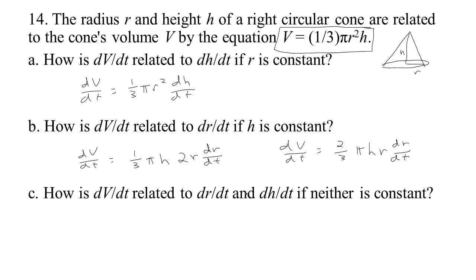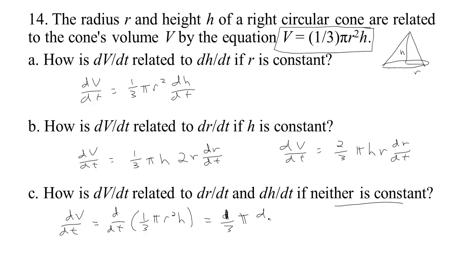What if both r and h are allowed to vary, so neither is constant? Then we take the derivative of both sides. On the left we get dV/dt. On the right, taking the derivative with respect to t of (1/3)πr²h, we have a product of two things. The constants (1/3)π pull through, and we have (1/3)π times the derivative with respect to t of the product r²h. Since r is a function of t and h is also a function of t, we apply the product rule.